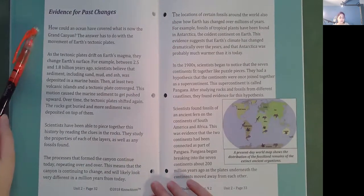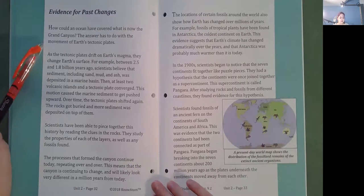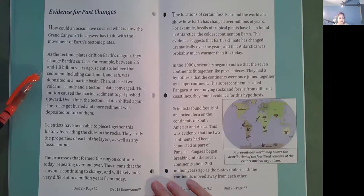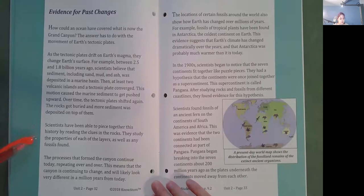Evidence for past changes. How could an ocean have covered what is now the Grand Canyon? The answer has to do with the movement of Earth's tectonic plates. As the tectonic plates drift on Earth's magma, they change Earth's surface. For example, between 2.5 and 1.8 billion years ago, scientists believe that sediment, including sand, mud, and ash, was deposited in a marine basin. Then, at least two volcanic islands and a tectonic plate converged. This motion caused the marine sediment to get pushed upward. Over time, the tectonic plates shifted again. The rocks got buried, and more sediment was deposited on top of them. Scientists have been able to piece together this history by reading the clues in the rocks. They study the properties of each of the layers, as well as any fossils found. The processes that formed the canyon continue today, repeating over and over. This means the canyon is continuing to change, and will likely look very different in a million years from today.